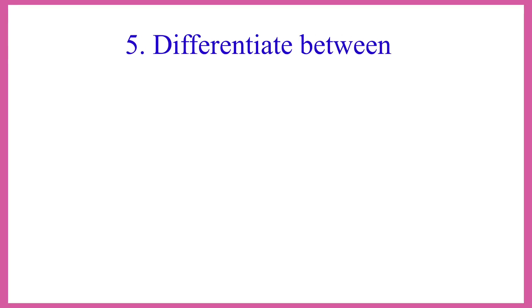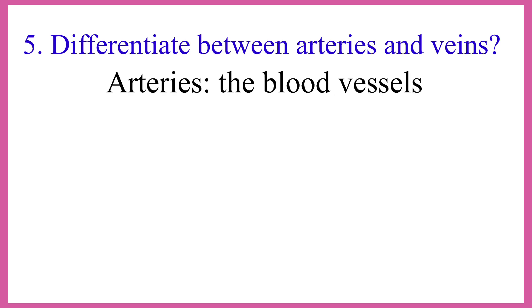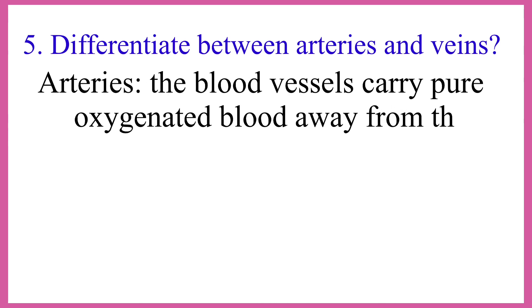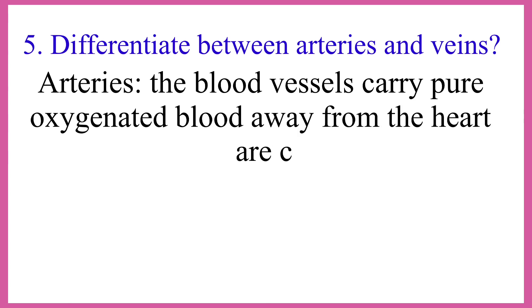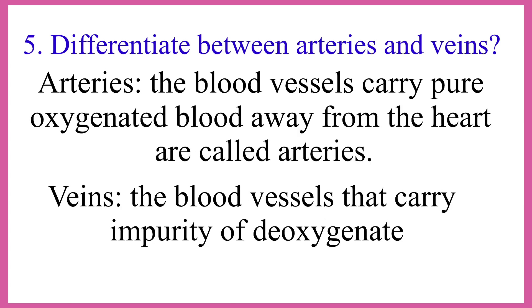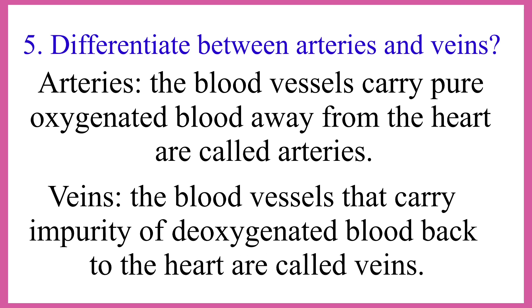Differentiate between arteries and veins. Arteries: the blood vessels that carry pure oxygenated blood away from the heart are called arteries. Veins: the blood vessels that carry impure deoxygenated blood back to the heart are called veins.